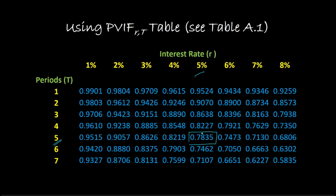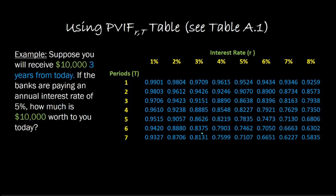Let me illustrate how we can use these tables for computation. Let's look at this example: suppose you will receive $10,000 three years from today. If the banks are paying an annual interest rate of 5%, how much is this $10,000 worth to you today? The timeline shows that if this is today, this is one year from now, two, and three - then three years from now, you're receiving $10,000.